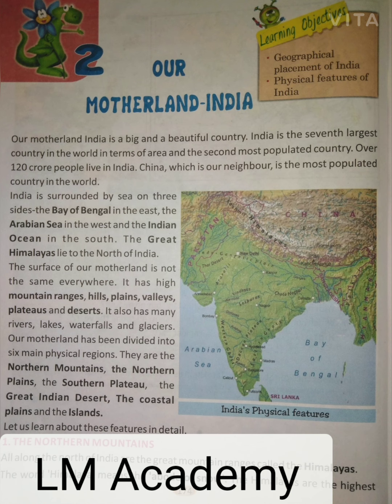India is surrounded by sea on three sides. Bharat teen taraf se samudra se ghira hai. The Bay of Bengal in the east — Bengal ki khadi purv mein; the Arabian Sea in the west — pashchim mein Arab Sagar; and the Indian Ocean in the south — aur dakshin mein Hind Maha Sagar. The Great Himalayas lies to the north of India. Vishal Mahan Himalay Bharat ke uttar mein padata hai.